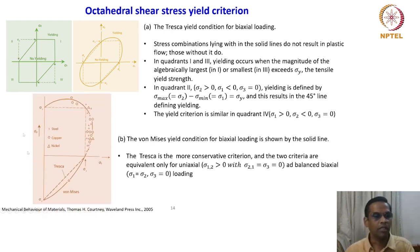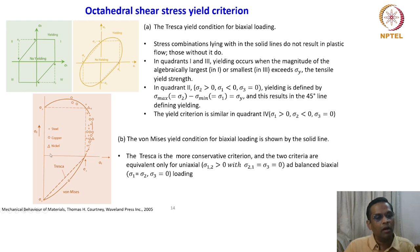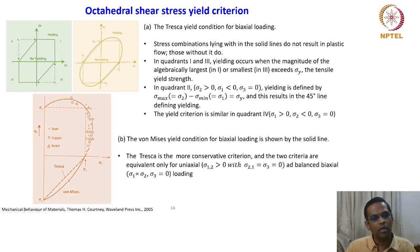This particular image shows the experimental findings. You can see that most of the data points for steel, copper, and nickel lie close to the von Mises criterion — not very different from Tresca, but closer to von Mises for biaxial loading.